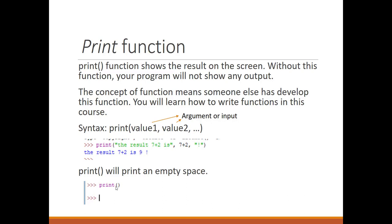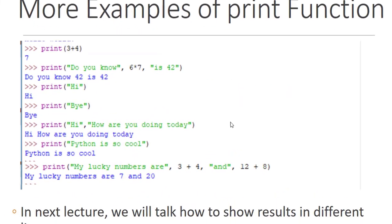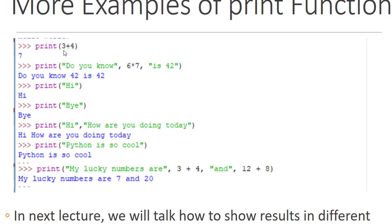Inside the print function we can have several inputs. In the next lecture we will talk about the types of these variables and what the quotation marks mean. For now, let's do more examples. print(3+4) gives 7 — the print function can do math, calculating and showing the result on screen. Another example: print("Do you know", 6*7, "is 42") — here we have three inputs: a string, then 6 multiplied by 7 (the asterisk means multiply), then another string.